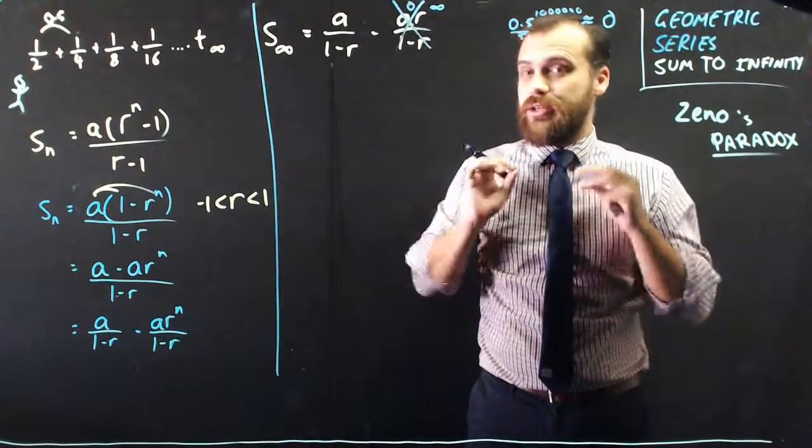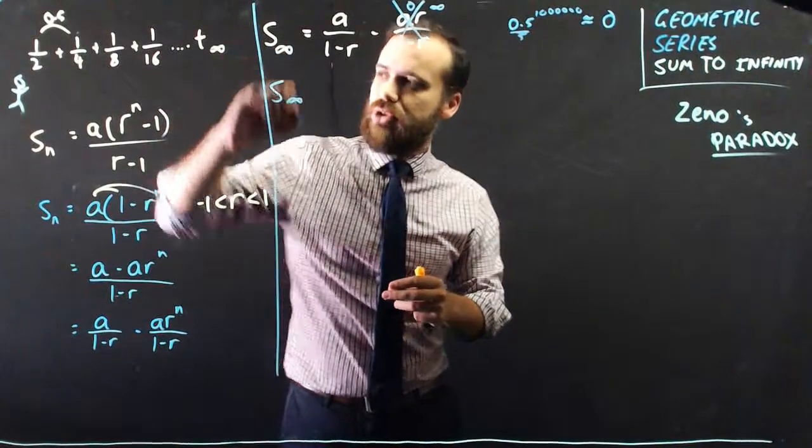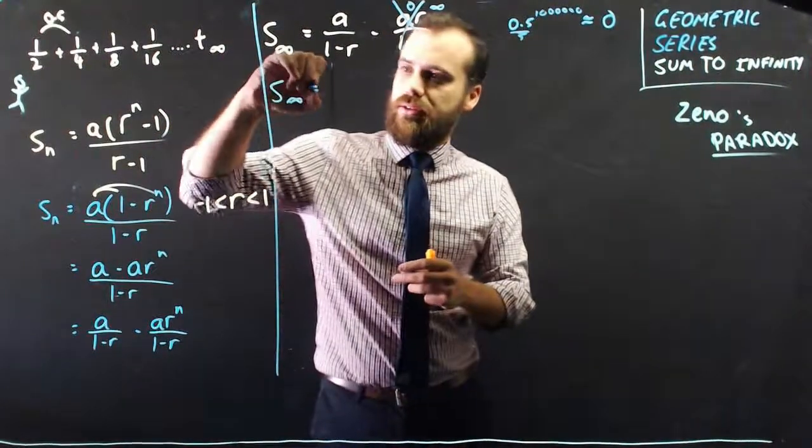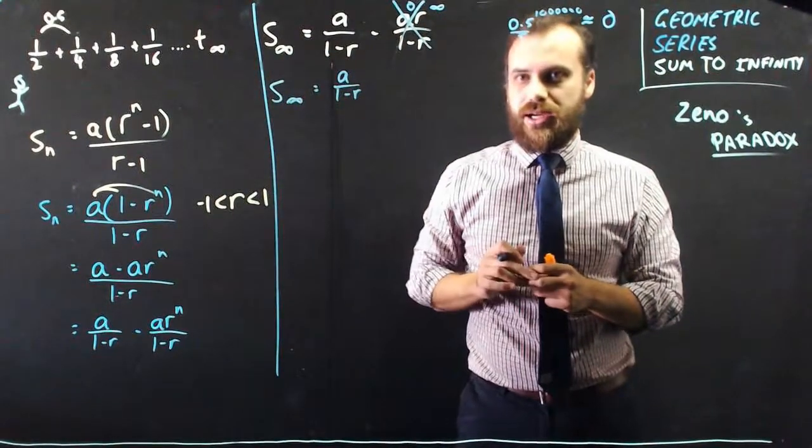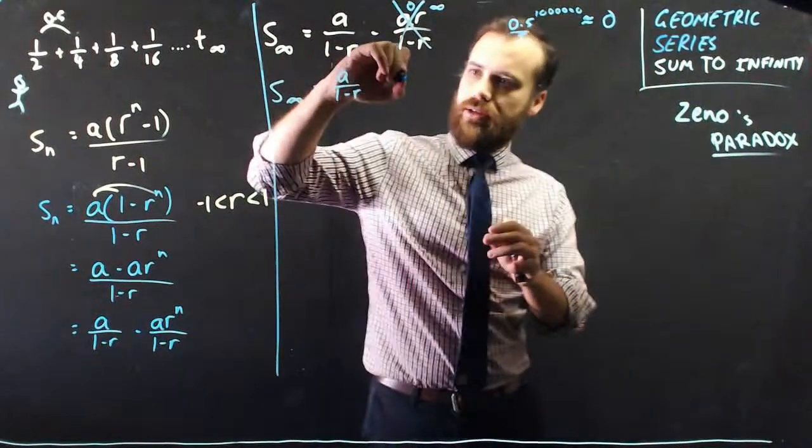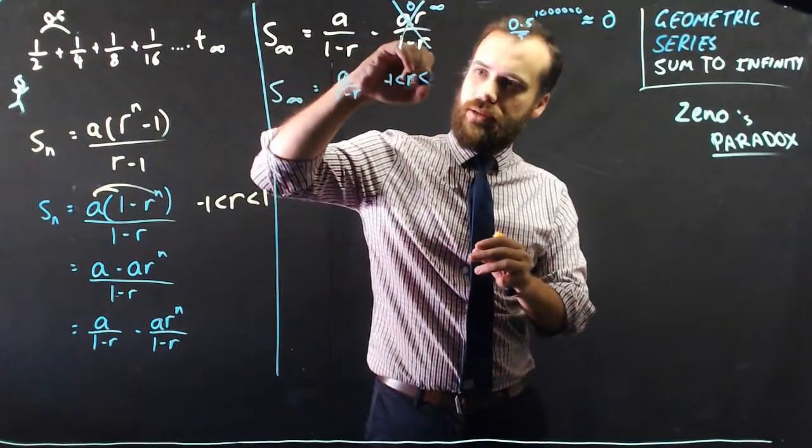So now we have a really, really neat formula. The sum to infinity of a geometric series is simply a over 1 minus r, as long as r is between negative 1 and 1.